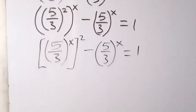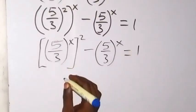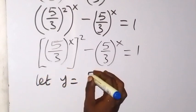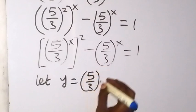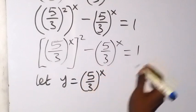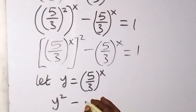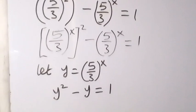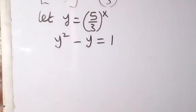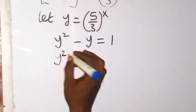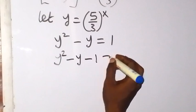From there, I can use a letter to represent (5 over 3) raised to power x. Let y equal (5 over 3) raised to power x, so that this equation becomes y squared minus y equals 1. We can use this to form a quadratic equation: y squared minus y minus 1 equals 0.